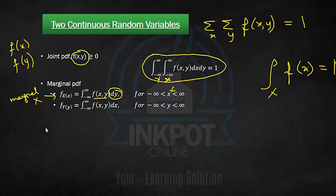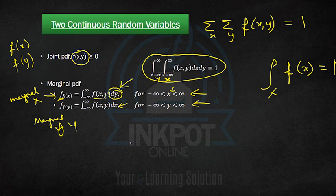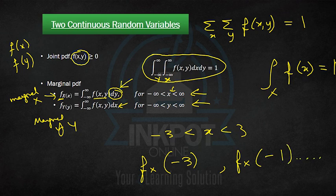Similarly, in the continuous case, the integral is taken over y if we want the marginal of x, and the integral is taken over x if we want the marginal of y. This is done for each possible value of x and y. For example, if the continuous variable x takes values between −3 and 3, we compute the marginal at −3, then at −1, and so on. For each value of x for which we want the marginal, we integrate over all values of y.